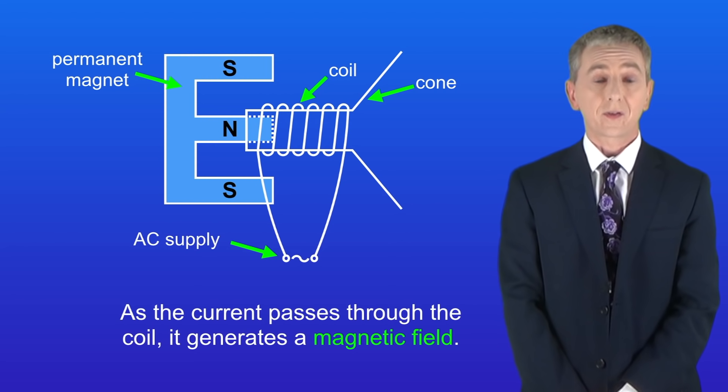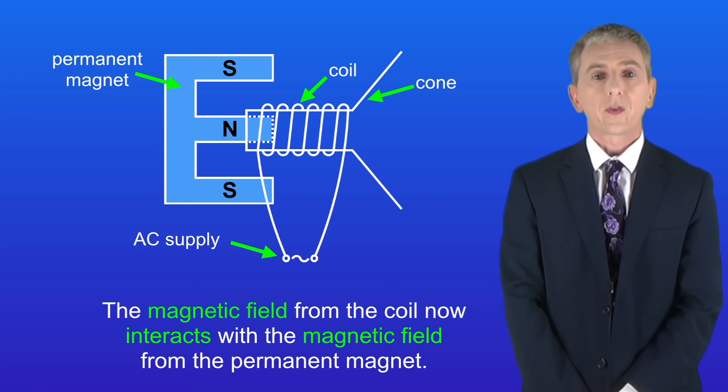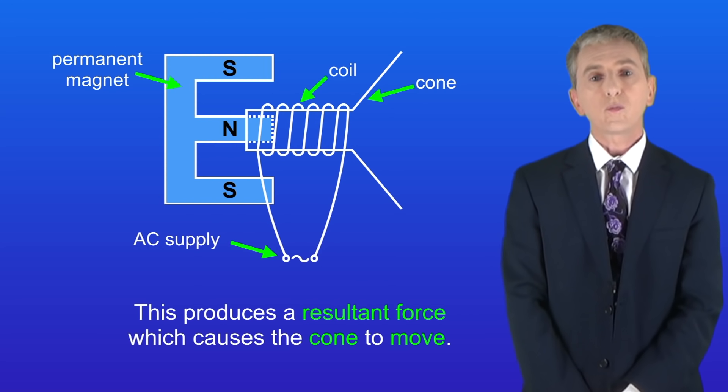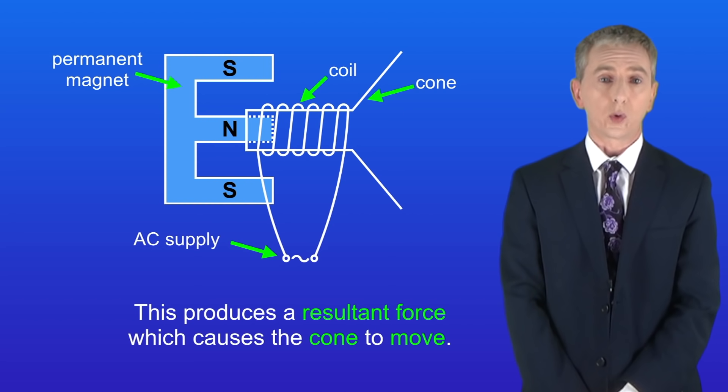As the current passes through the coil, it generates a magnetic field. The magnetic field from the coil now interacts with the magnetic field from the permanent magnet. In other words, these magnetic fields either attract or repel each other. This produces a resultant force which causes the cone to move.